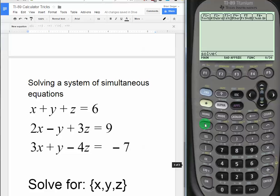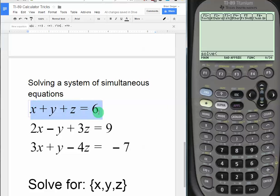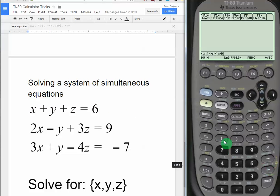The first one is x plus y plus z equals 6, so we'll type that one in: x plus y plus z equals 6. Now we need our AND function to show that there are two other equations.